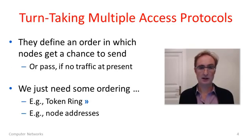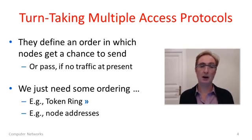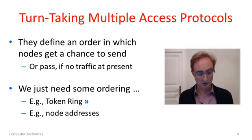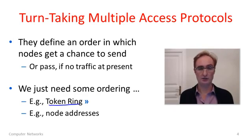With turn-taking multiple access protocols, the protocol defines an order in which the nodes send. The order is really an opportunity to send — a chance to send. So if you have a frame, when your turn comes around you get to send it. If you don't, you just pass and the next node gets a turn. All we really need to do is devise some ordering. I'll talk about one on the next slide, a method called token ring. You can imagine other methods — for instance, nodes could use their addresses to impose an ordering from lowest to highest as to who gets to send next.